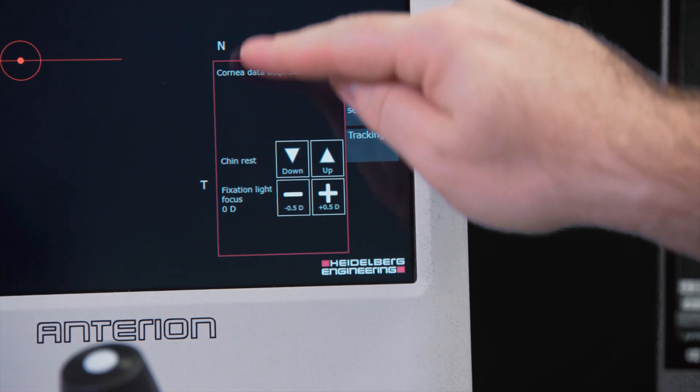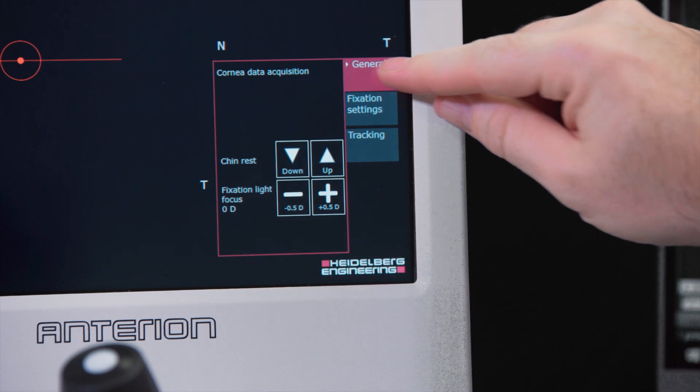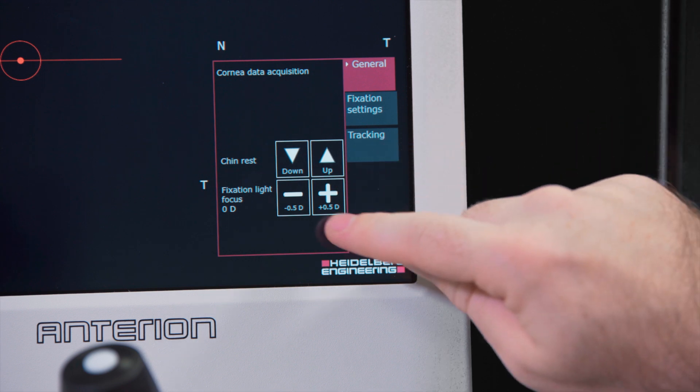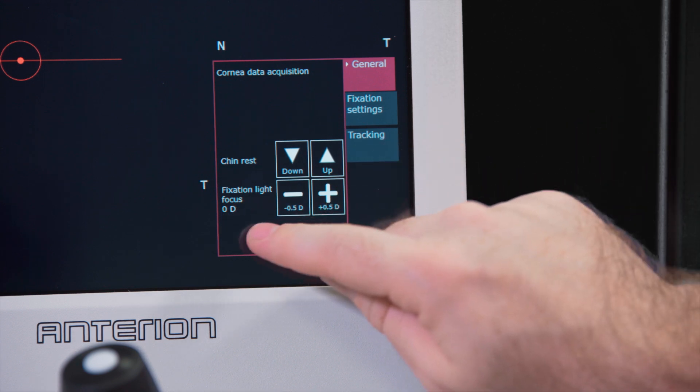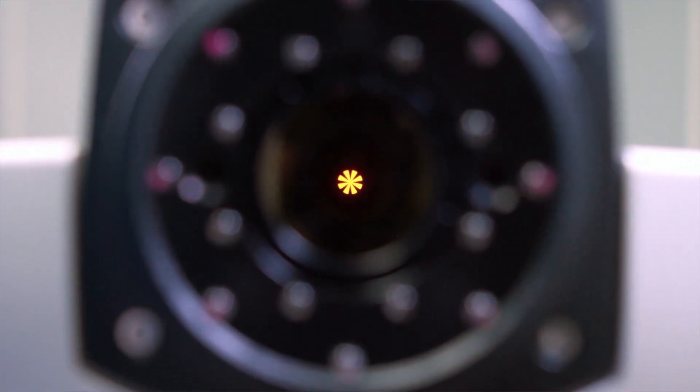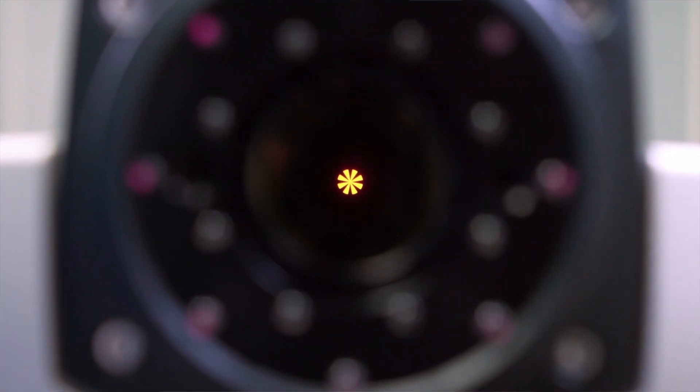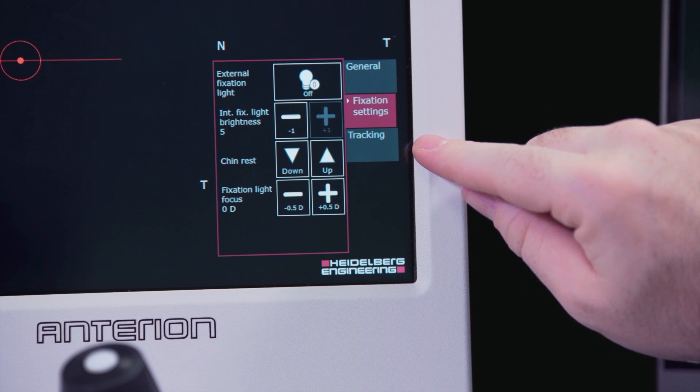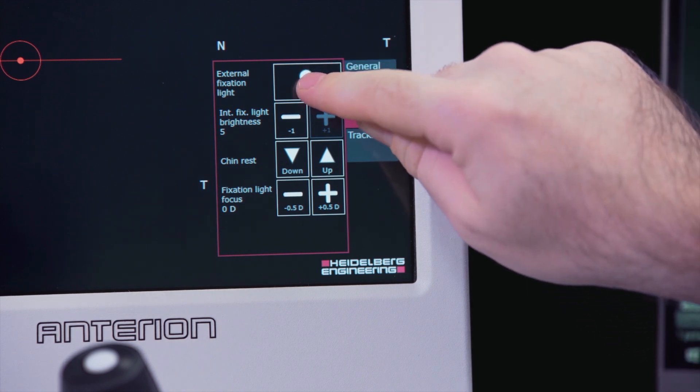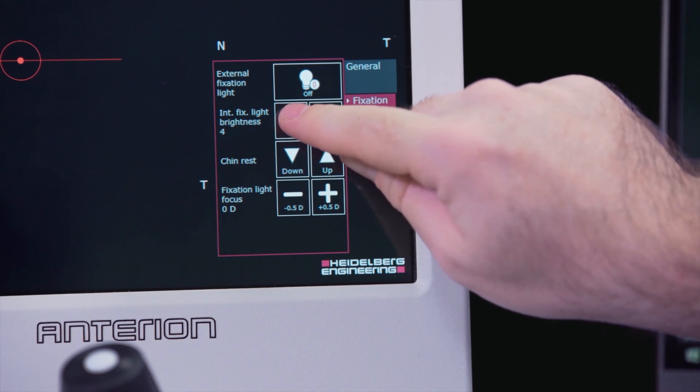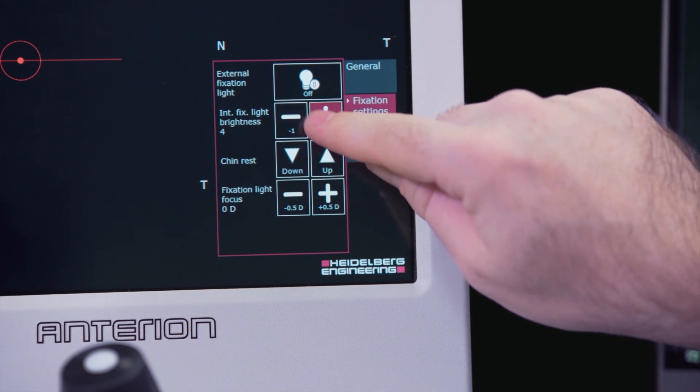The general tab on the touch screen has extra controls for the chin rest and for the fixation light focus. Ask the patient whether the internal fixation light is clearly visible while the camera is adjusted. The fixation settings tab has the button for toggling the external fixation light on or off and changing the brightness of the internal fixation target.